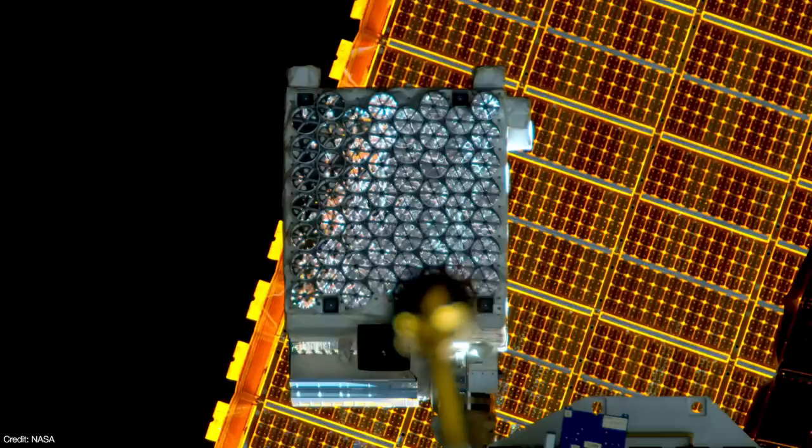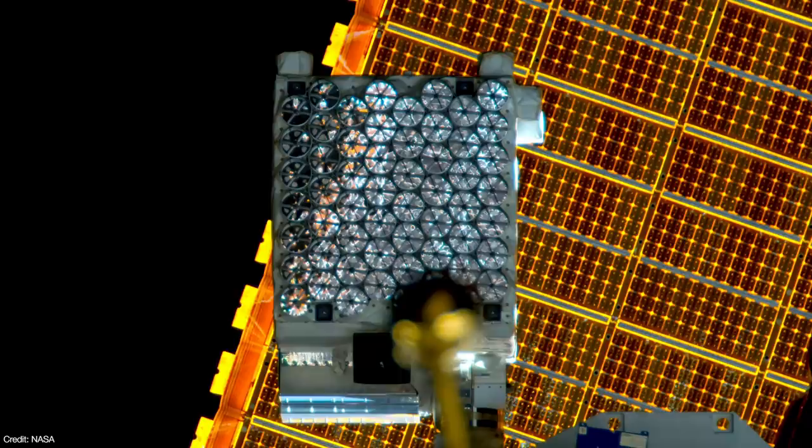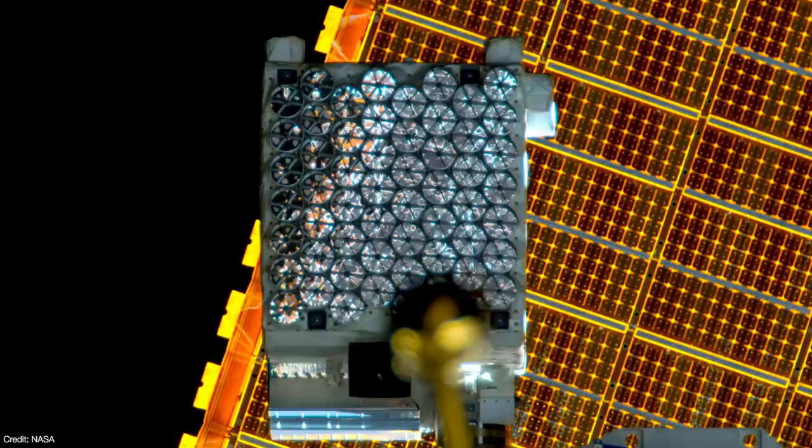NICER uses an array of 56 detectors to record the precise energy levels and arrival times of individual x-ray photons to an accuracy of just 100 nanoseconds. That's 20 times more accurate than previous x-ray timing observatories.